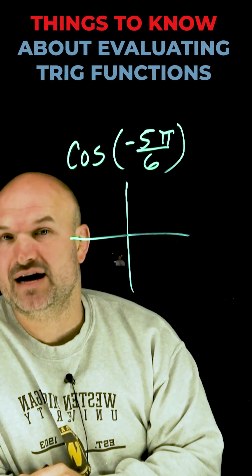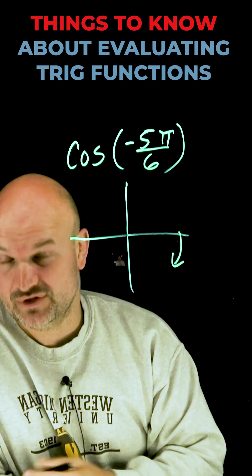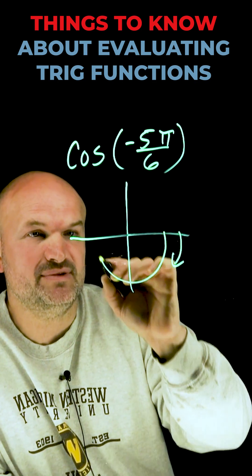you need to know how to graph the angle you're trying to evaluate the cosine for. So in this case, I have negative 5π over 6. We know we have to go in the negative direction, which is clockwise, and that's going to be somewhere over here.